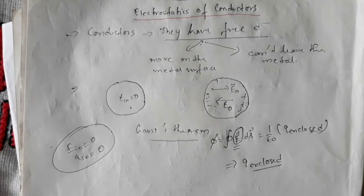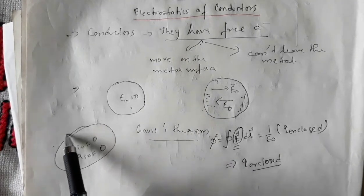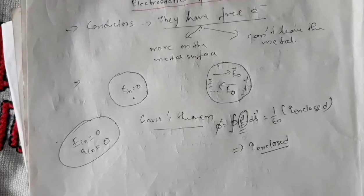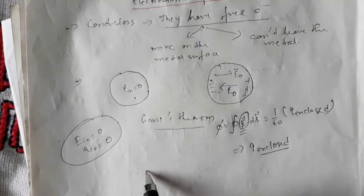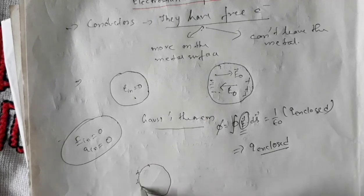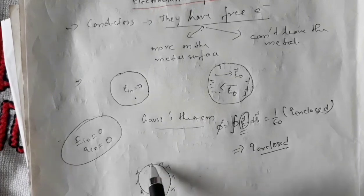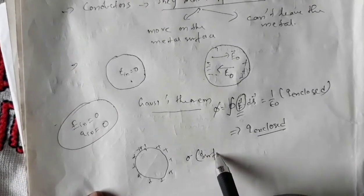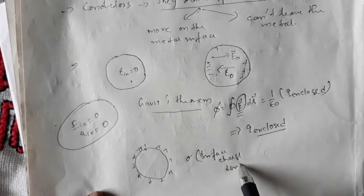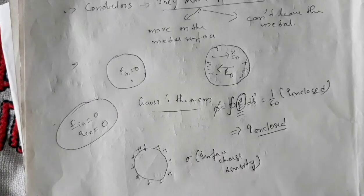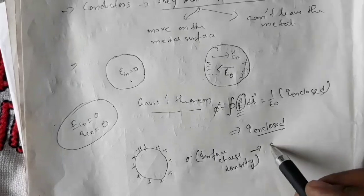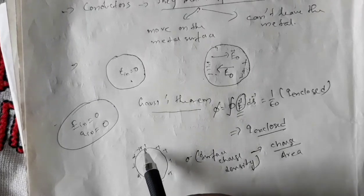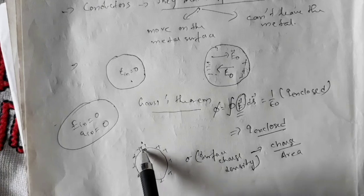The next property: as we have seen, any free charge will be on the surface of the conductor. What will be the value of the electric field associated with this surface charge distribution? Suppose there is a conductor with charge on the surface, and sigma is the surface charge density — that is, charge per unit area. We need to find the electric field at a particular region corresponding to this surface charge density.